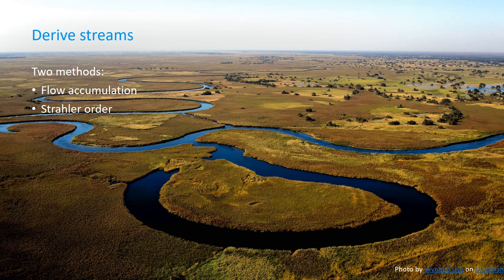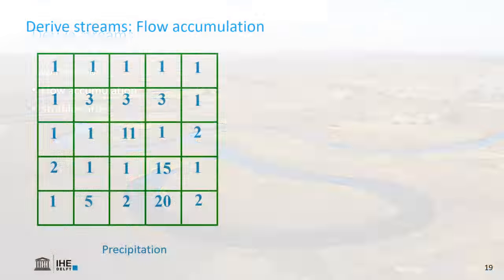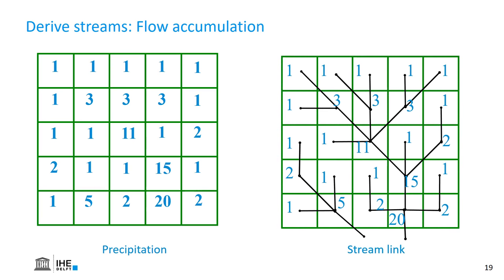We can look at the flow accumulation, or we can look at the Strahler order. In this map we see the amount of precipitation in each cell. We can superimpose the stream link that has been derived in the previous step. The stream link determines, based on the flow direction, how the amount of precipitation is moving through the catchment.